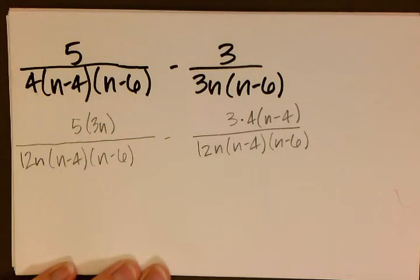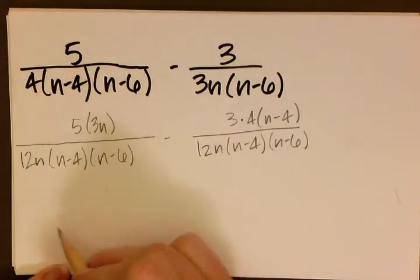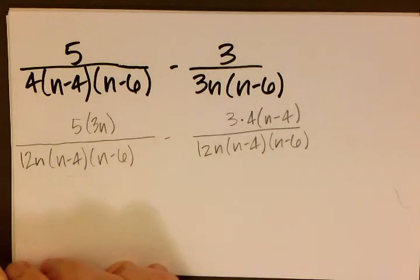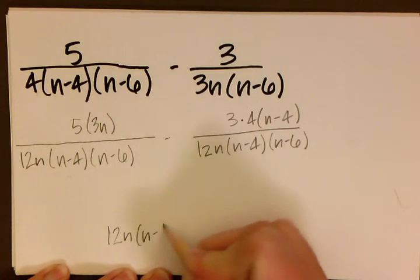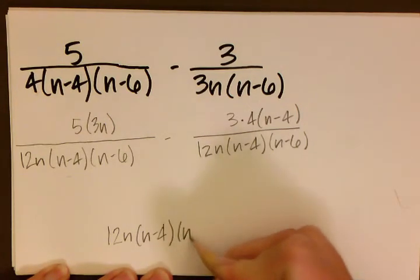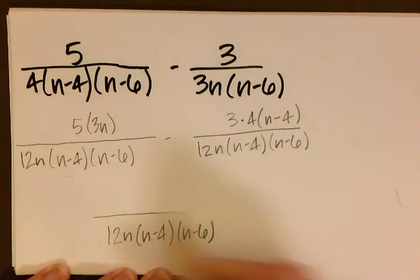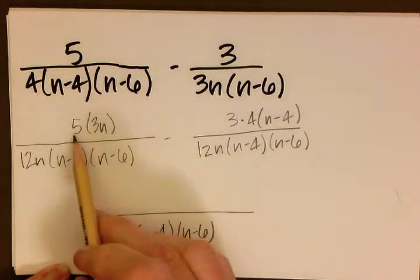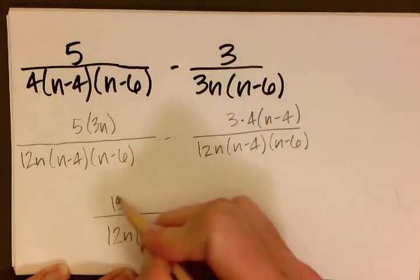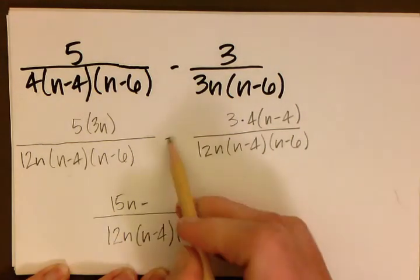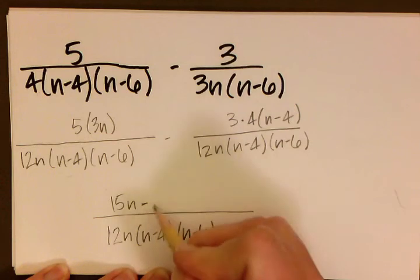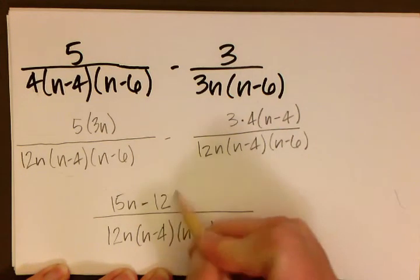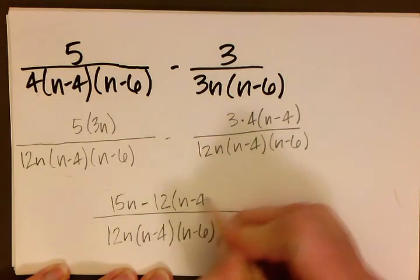Let's go ahead and do some math. We can now combine our common denominator, so we can have one denominator. Our new numerator can be 15n. We're going to go ahead and use this subtraction here. 3 times 4 is 12, and then we have our n minus 4.